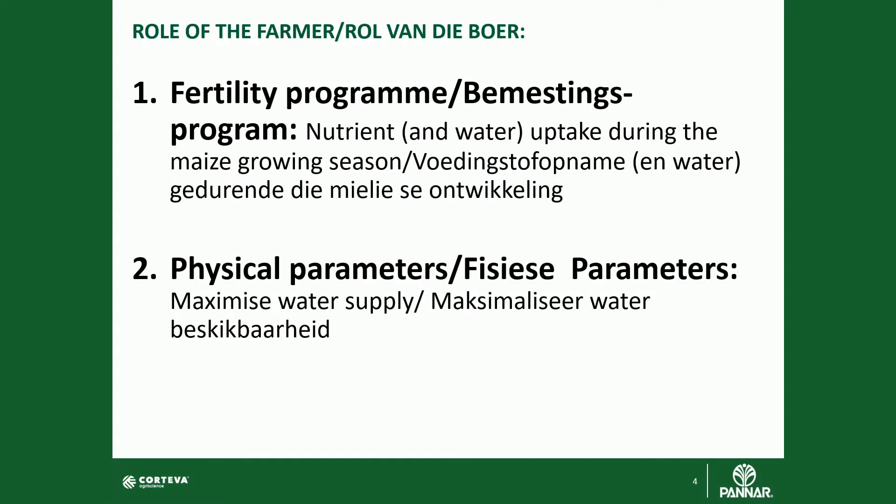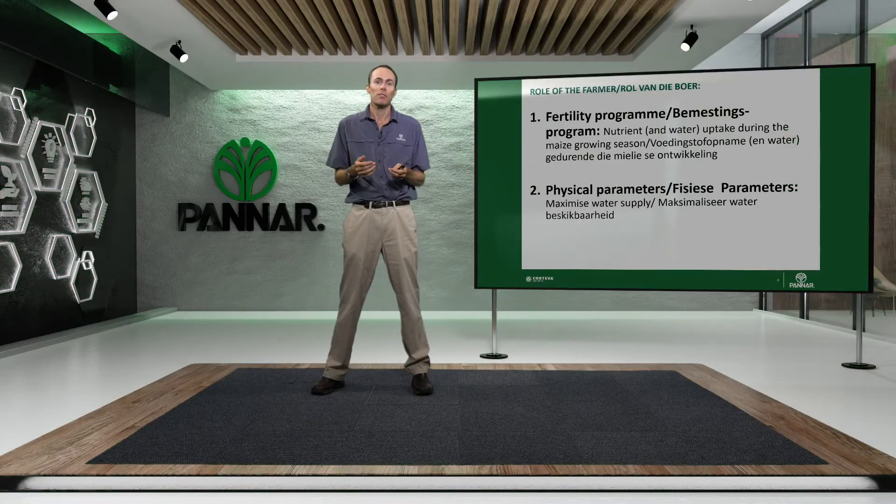Now that we know what the maize plant needs, what is the role of the farmer in this whole process? There are basically two primary roles that we need to get in place — the cornerstones of that maize's growth and development. Firstly, we need a fertilizer program that can supply the right levels of nutrition for that plant. And secondly, we need to look at the physical parameters of the soil to ensure that we can maximize water supply to the plant. Those two, hand in hand, will give that maize crop the best opportunity for performing through the season.